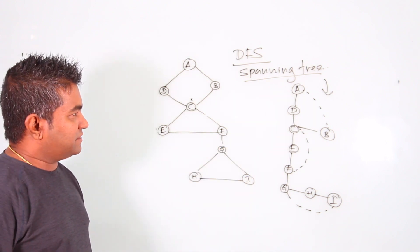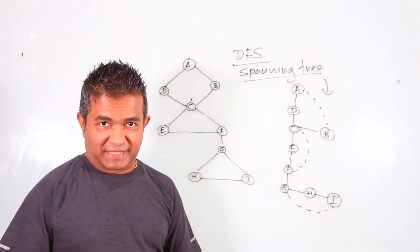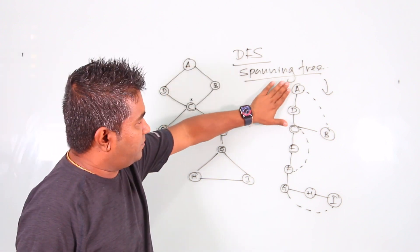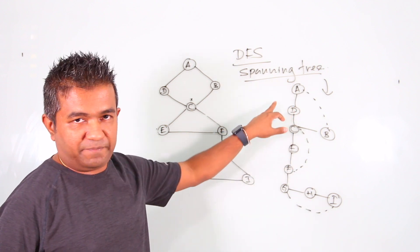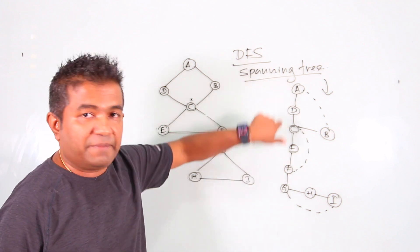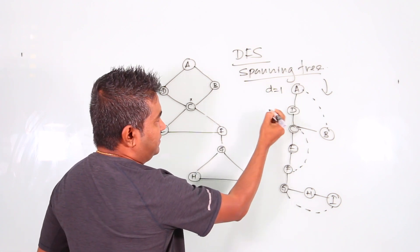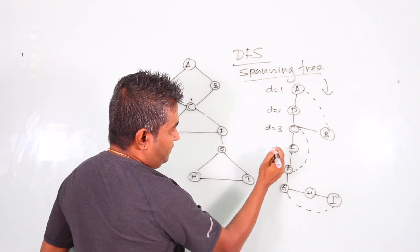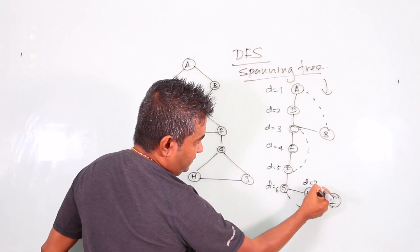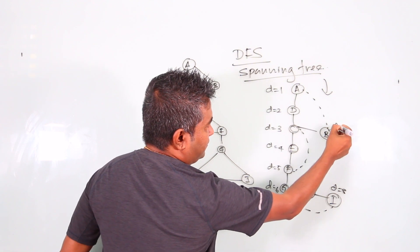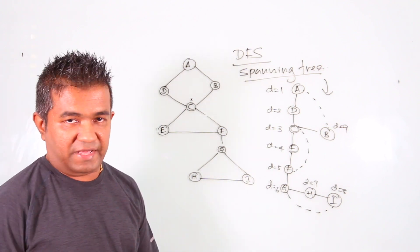Now let's figure out the articulation points of this graph. To do that, you need to do three things. First, when you build the spanning tree, you need to mark the depth index — how deep each node is in the traversal. We started from A so A has depth index 1, D is 2, C is 3, E is 4, F is 5, G is 6, H is 7, I is 8, and B is 9.